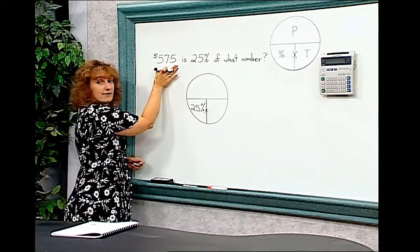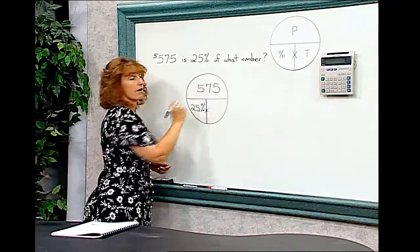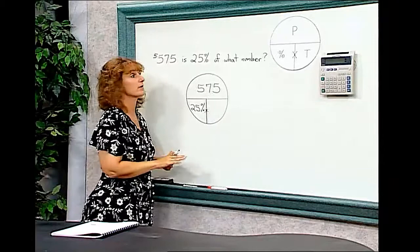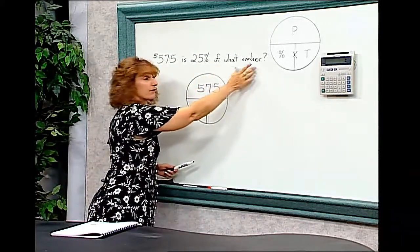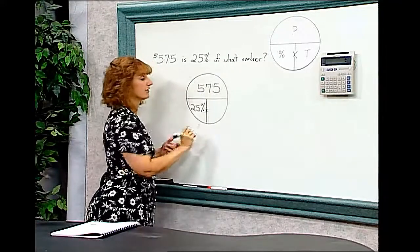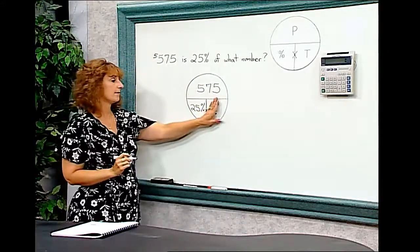The $575 is the part. It's only part of the cost of the car. And if you're not sure, remember that the number right after the word of is always your total. There is no number there. So your total is missing. If we hide that part, we know we have to divide.